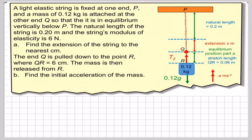The end Q is then pulled down to point R, so the weight's pulled down to point R, which is there, where the distance further pulled down is 6 centimeters, 0.06 meters. The mass is then released from there, it's going to go upwards, we've got to find the initial acceleration of the mass.